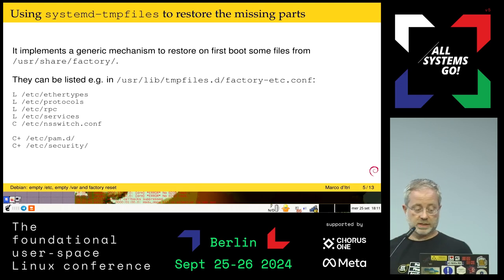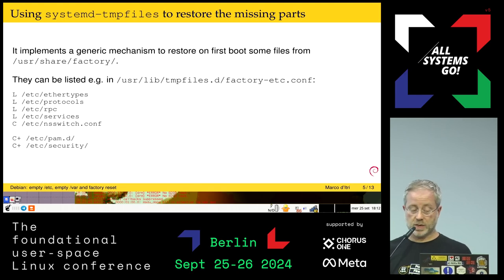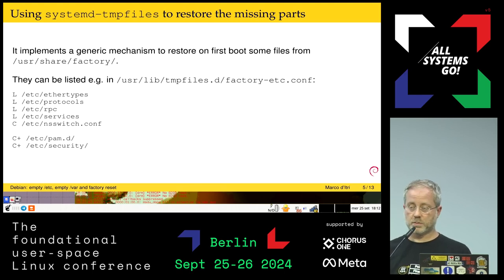By using systemd tmpfiles, I can copy a few files from /usr/share/factory that are needed and cannot be replaced in other ways. They can be copied or just symlinked from /usr/share/factory.